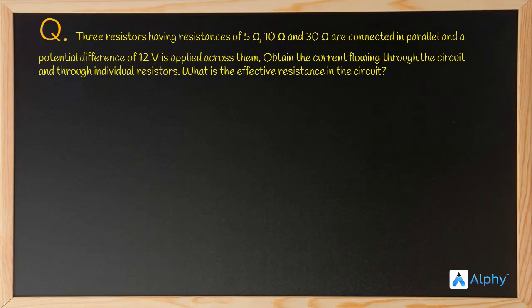For effective resistance in parallel connection, we assume Rp and use the formula: 1 by Rp equals 1 by R1 plus 1 by R2 plus 1 by R3, up to 1 by Rn for n resistors. We take the reciprocal of each resistance and add them together.